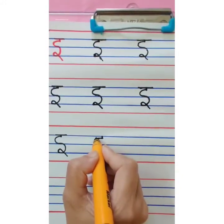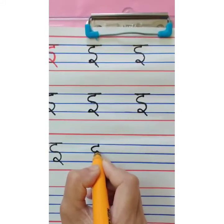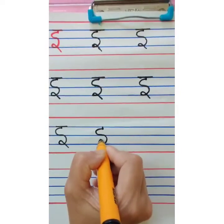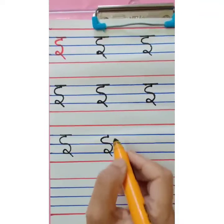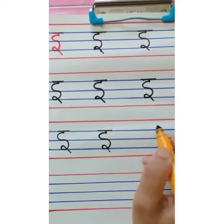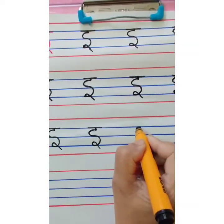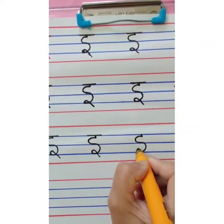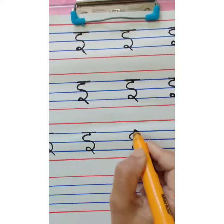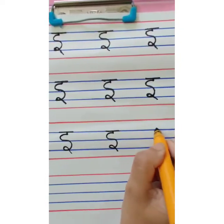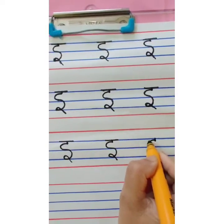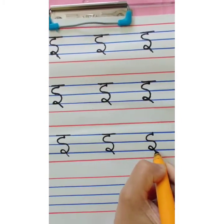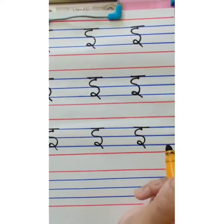One more time — small standing line, don't give a big standing line, then write S like this, then go up, take a small loop, and overhead small sleeping line. This is chhoti E. This way you are going to complete your tracing rows and then write independently. Small standing line, write S, first C touching the second blue line, then ulta C, go up, small loop, and overhead small sleeping line. Chhoti E.